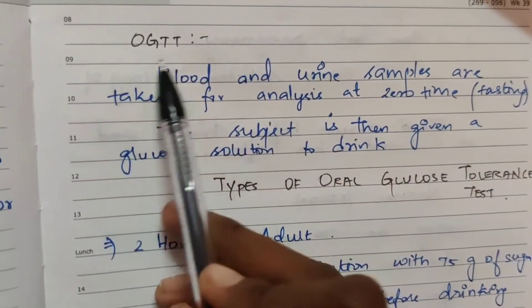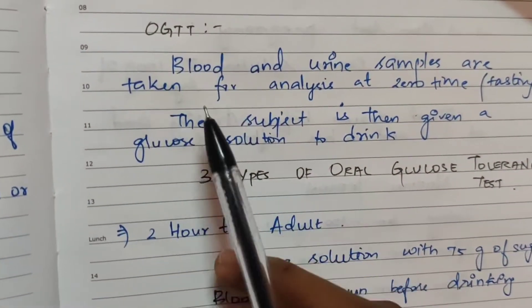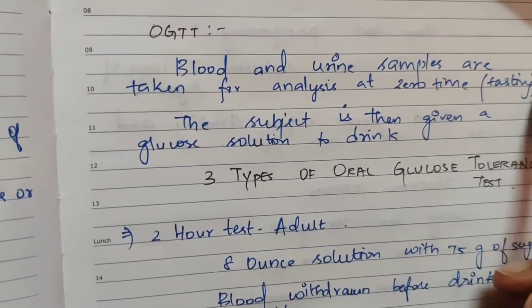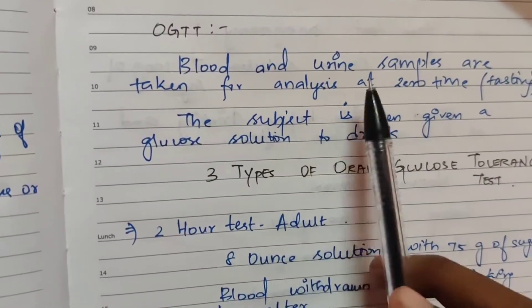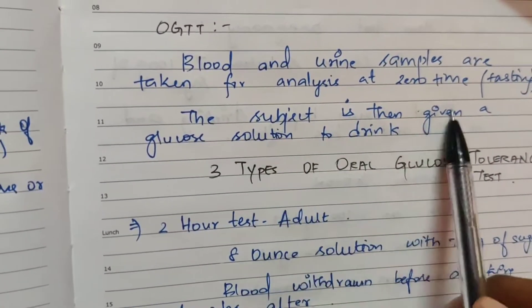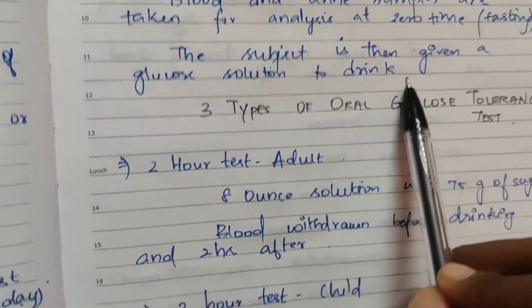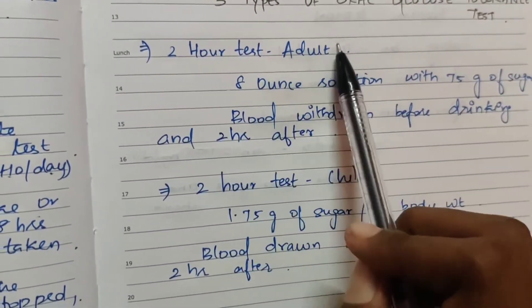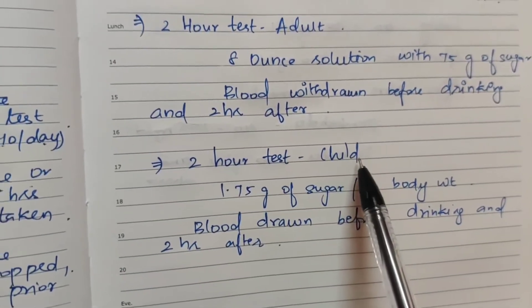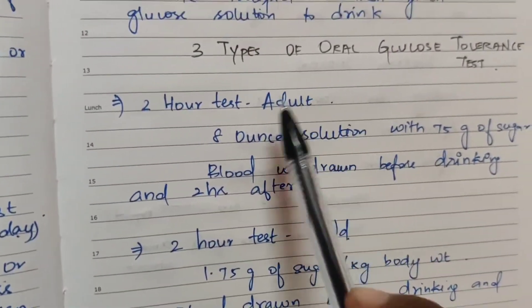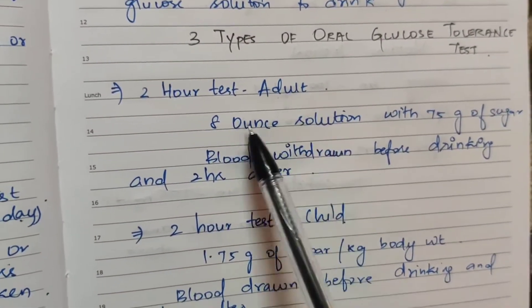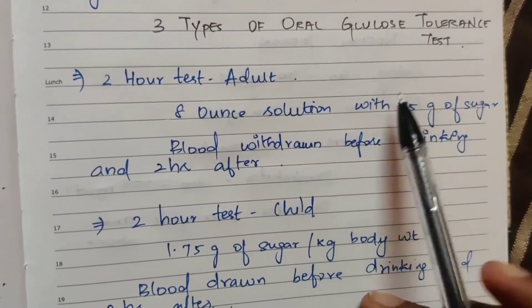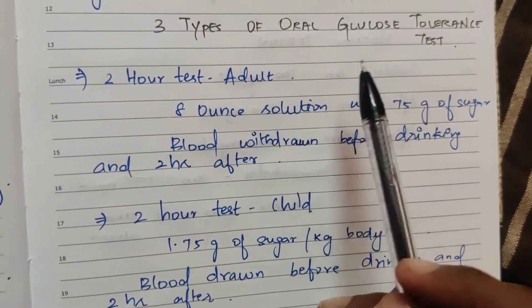For OGTT — Oral Glucose Tolerance Test — blood and urine samples are taken at fasting (time 0). There are 3 types of oral glucose tolerance test: the 2-hour test for adults, the 2-hour test for children, and the 3-hour test for pregnant women. For adults, an 8 oz solution with 75 grams of sugar is dissolved and consumed.